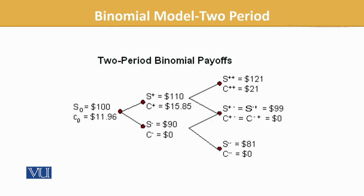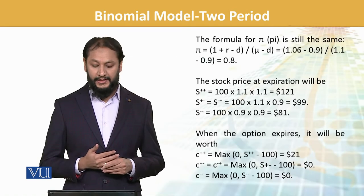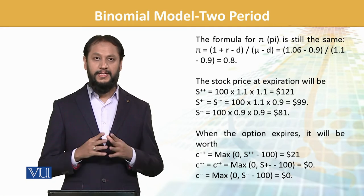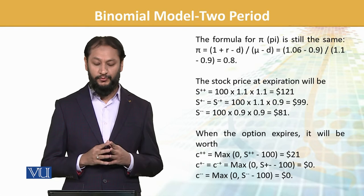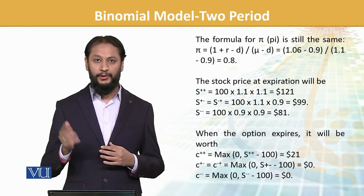You can see from the diagram the formula for calculating how the paths work and how probabilities move. You can recall: 1 plus r, the risk-free rate, minus d, over u minus d.